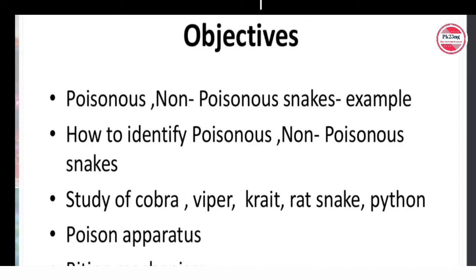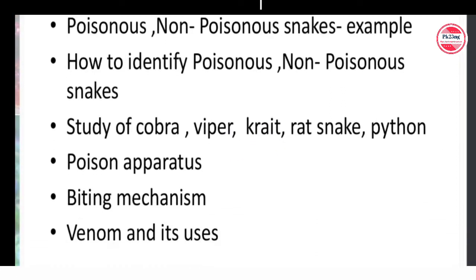We will cover poisonous and non-poisonous snakes with examples, and how to identify poisonous and non-poisonous snakes. We will study the cobra, viper, krait, rat snake, and python. We will also discuss the poisonous apparatus — that is, all the parts involved when a poisonous snake bites a person. Next, we discuss the biting mechanism: how a poisonous snake bites, and what mechanism it uses. Finally, we will discuss venom and its uses.